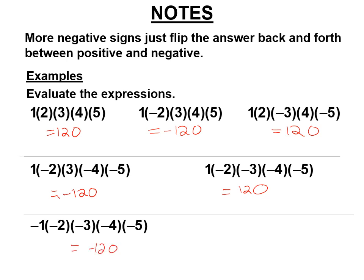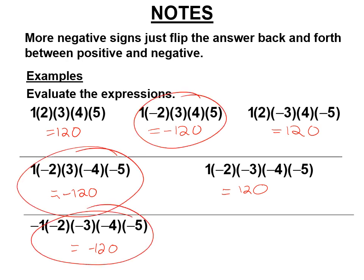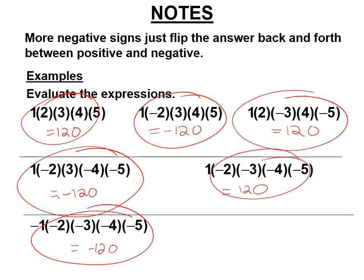Can we come up with a rule? When there was one negative, three negatives, five negatives, seven, nine, eleven negatives, the answer will be negative. So if there's an odd number of negatives, the answer is negative. If there's zero, two, four, six, eight negatives, the answer will be positive — an even number of negatives.